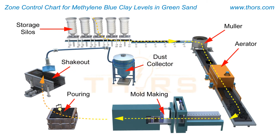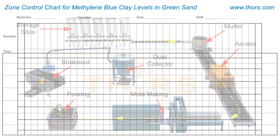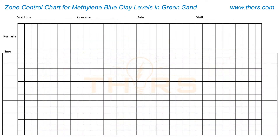The amount of active clay or methylene blue clay in a sand system is monitored using a zone control chart. The zone control chart is a statistical tool used to control the stability of a process. This method enables the operator to maintain the MB clay content close to the target value.